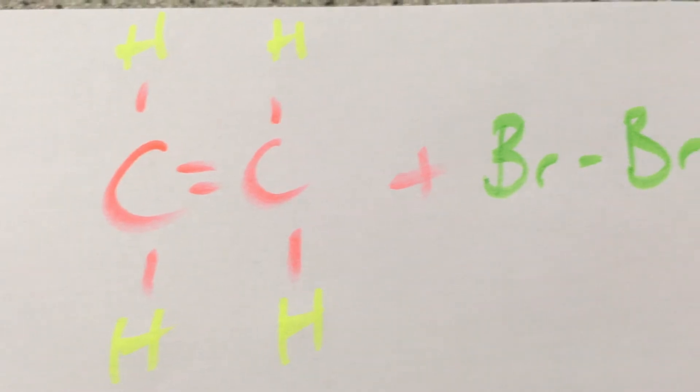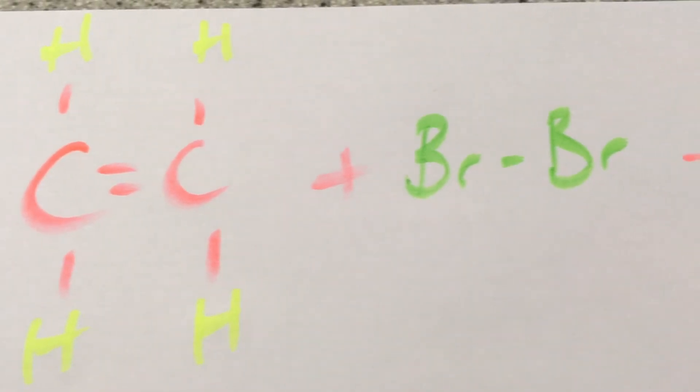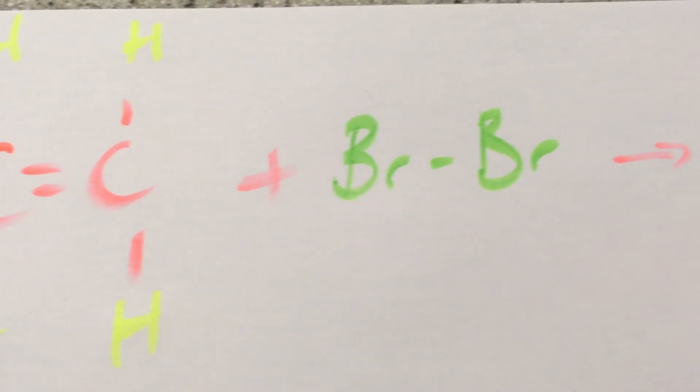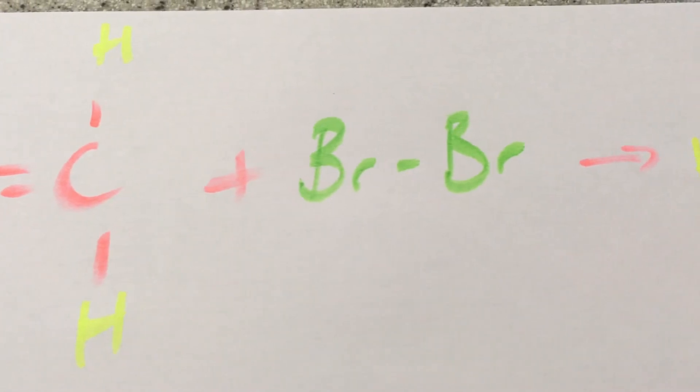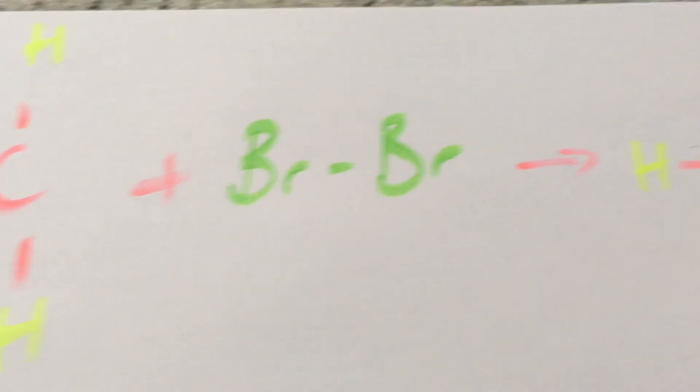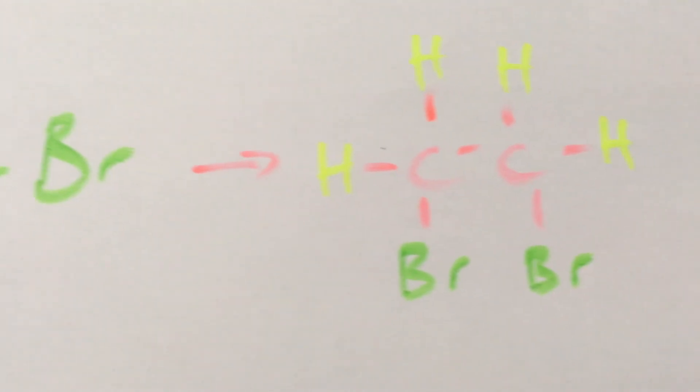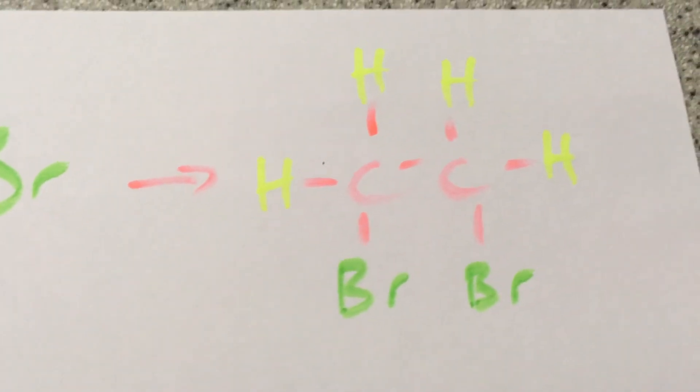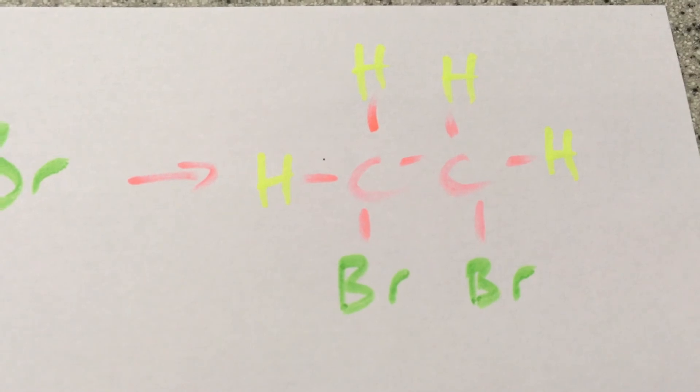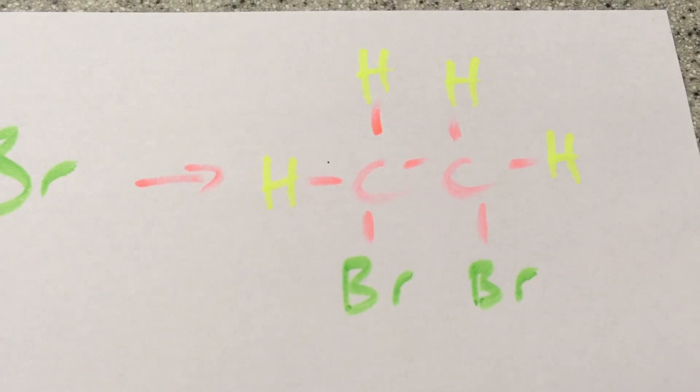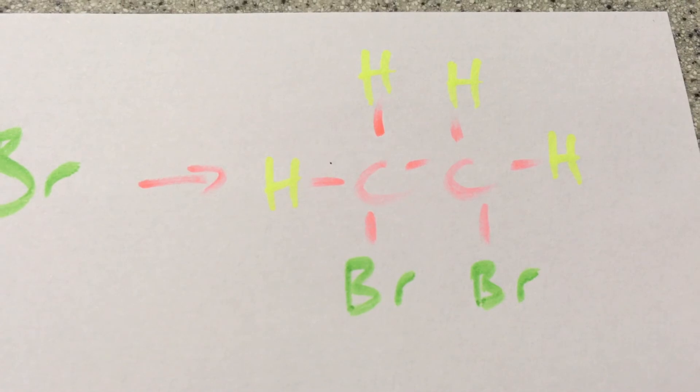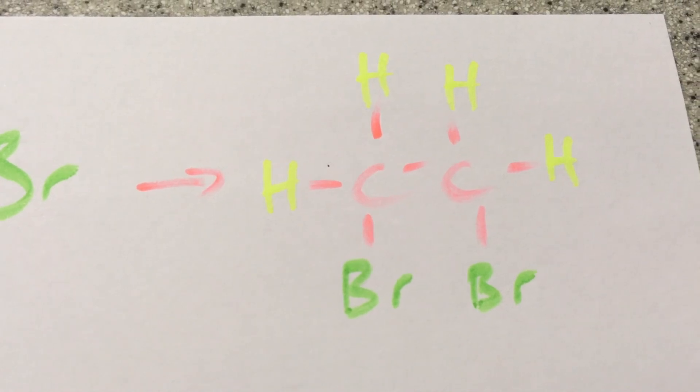Looking at the structural formula may help to see where bonds are broken and bonds are made. So ethene, double bond in the carbon, plus bromine BR2. An addition reaction becomes dibromo ethane, single bond in the carbon and two bromide ions attached.